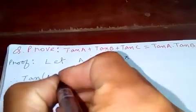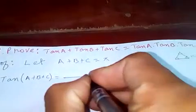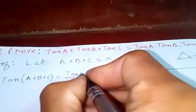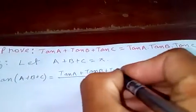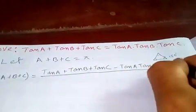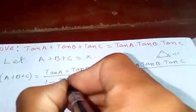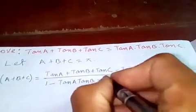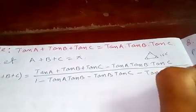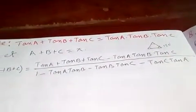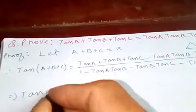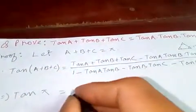Tan of A plus B plus C equals tan A plus tan B plus tan C minus tan A tan B tan C, all over 1 minus tan A tan B minus tan B tan C minus tan C tan A. So we have this formula here. We know A plus B plus C equals π, so this is π.